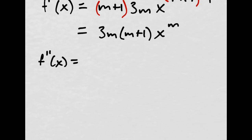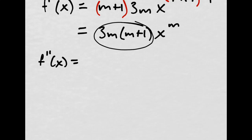So this is the same thing as 3m times m plus 1 times x, and then m plus 1 minus 1 is just regular m. I'm treating the m as just a number. So that's f prime. I want f double prime. So what is that? Take the derivative again. F double prime of x equals, well, what do I do with all this?